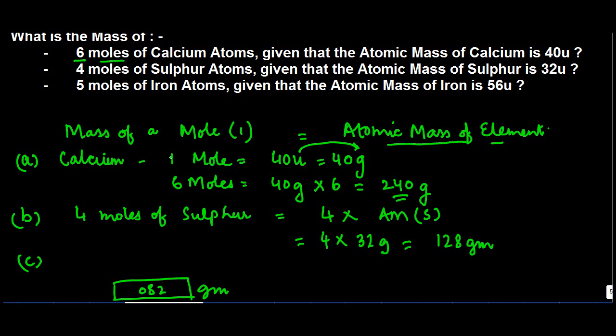So whenever you have to find out the mass of multiple number of moles, the only thing you need to know is what is the atomic mass of that particular element. The moment you know that, you can just multiply it simply with the number of moles which you are required to calculate.